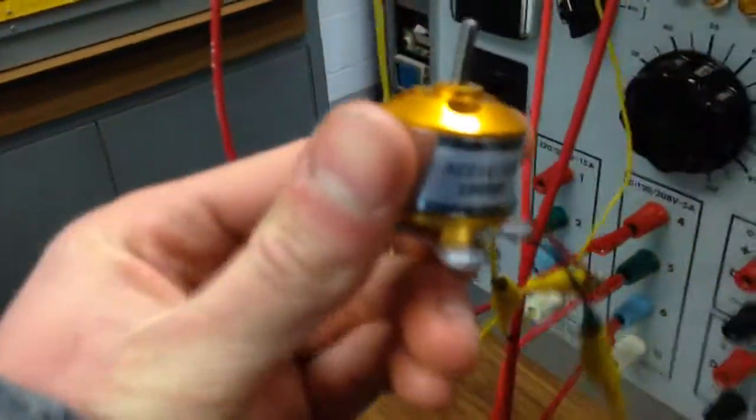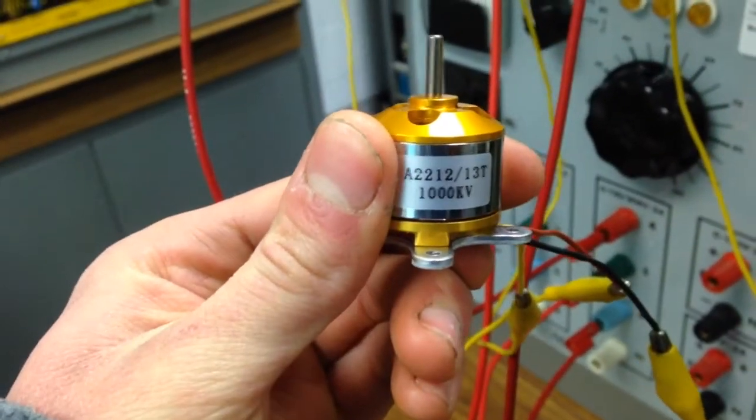Alright, so we've got a brushless motor right here, 1000 kV.